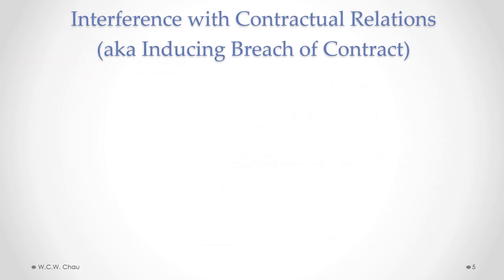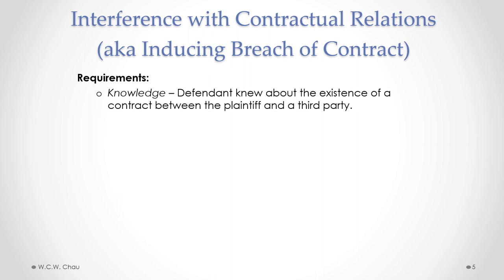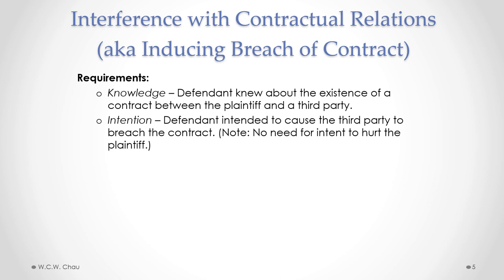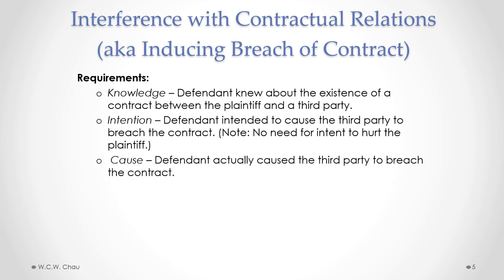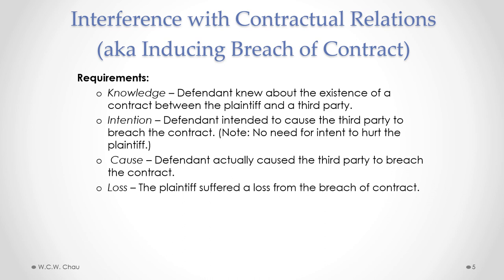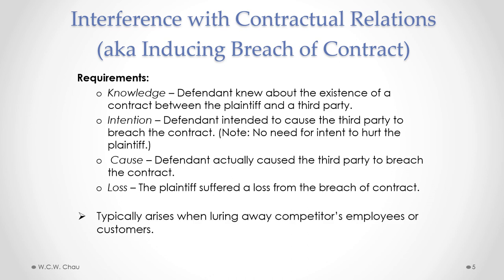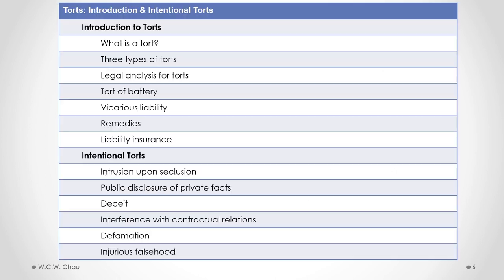Let's recap the legal requirements for the tort of interference with contractual relations. The first requirement is knowledge: the defendant had to actually know about the existence of a contract between the plaintiff and a third party. The second is intention: the defendant intended to cause the third party to breach the contract. The third is cause: the defendant actually caused the third party to breach the contract. The fourth is loss: the plaintiff suffered a loss from the breach. This tort typically arises when one company is trying to lure away employees or customers of another company.